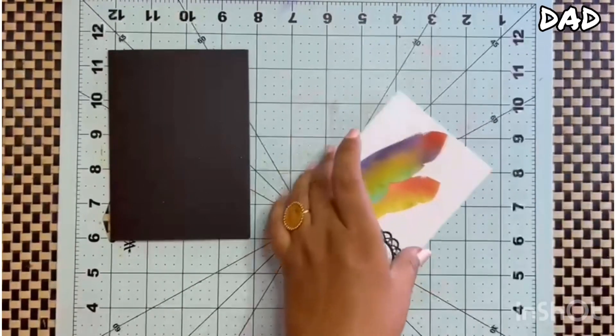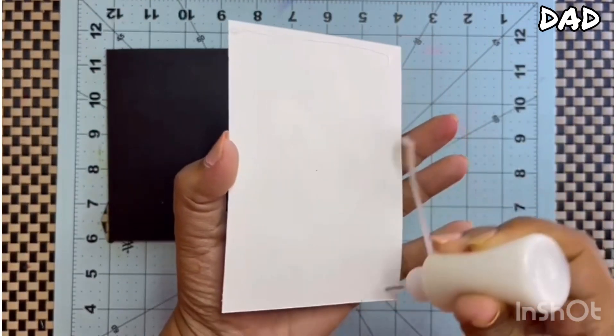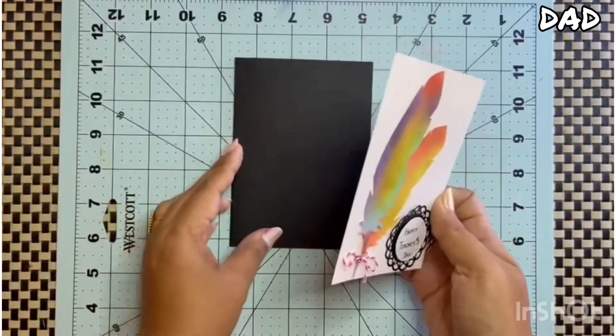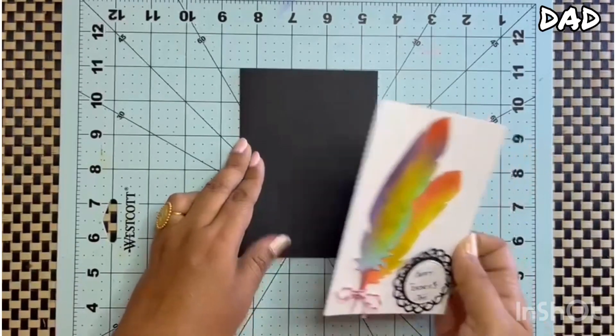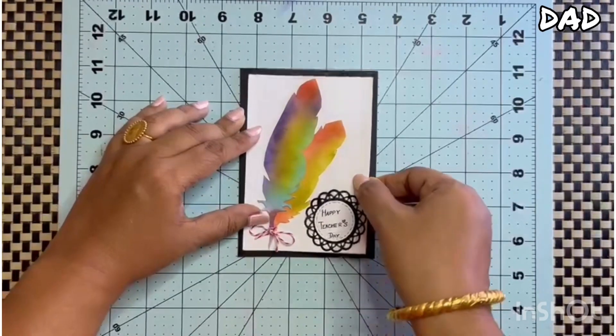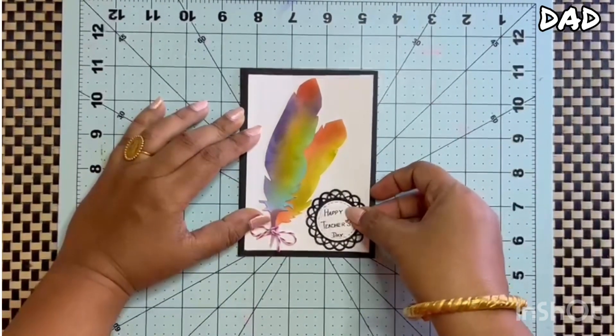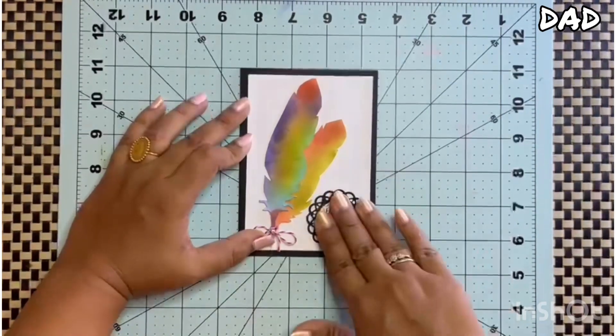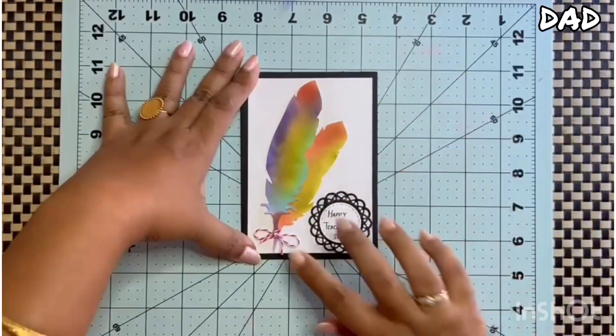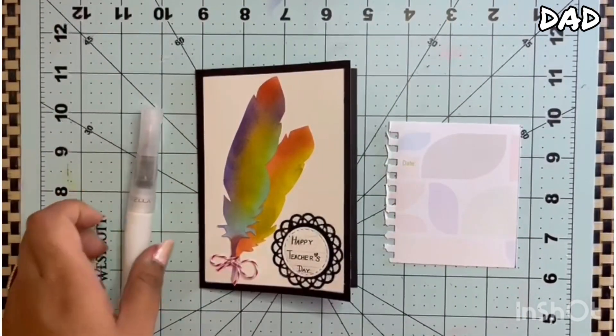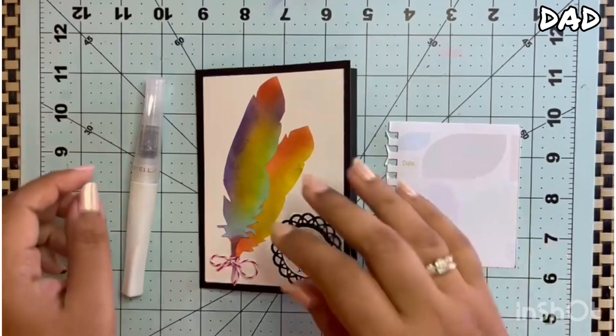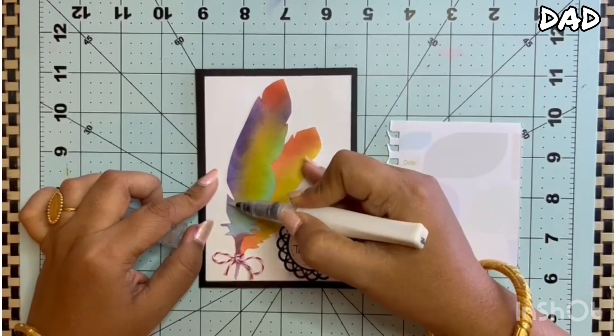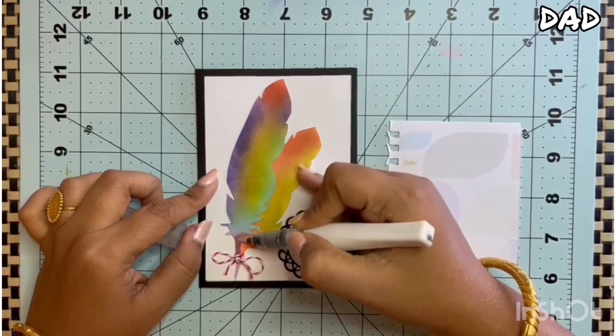Now this I will be attaching at the back of my front layer, onto my black cardstock paper. On this side I am trying to be straight. And my card is ready. My card is ready. Only thing I will be needing is I will be adding some glitter on my feathers, a little bit of brushing here and there.